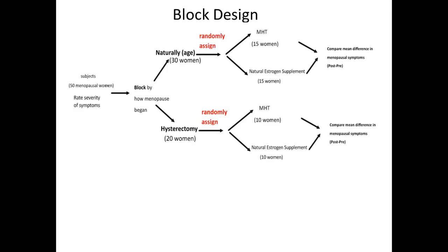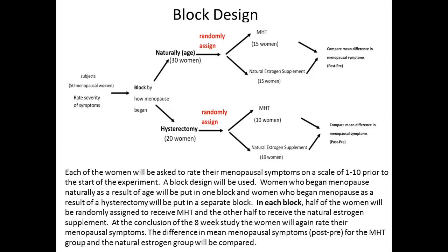In the block design, we start with 50 menopausal women who rate the severity of their symptoms, then block by how their menopause began — either naturally by age or by hysterectomy. Women who began menopause naturally will be put in one block, and those who began menopause by hysterectomy in a separate block. In each block, half the women will be randomly assigned to receive MHT and the other half to receive the natural estrogen supplement. At the conclusion of the 8-week study, the women will again rate their symptoms and the difference in mean menopausal symptoms (post minus pre) will be compared for both blocks.